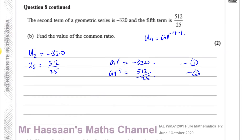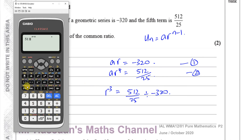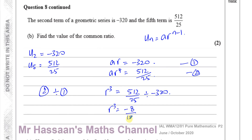Dividing equation 2 by equation 1: AR⁴ / AR = R³, and (512/25) / (−320) = −512/8000 = −8/125. So R³ = −8/125, therefore R equals the cube root of −8/125, which is −2/5. The common ratio is R = −2/5.